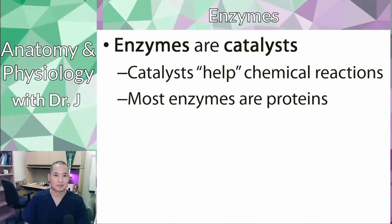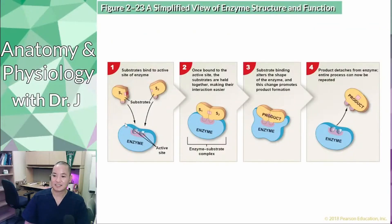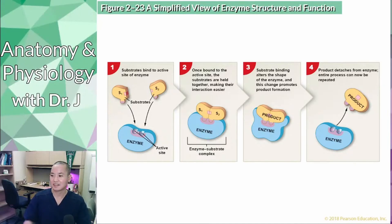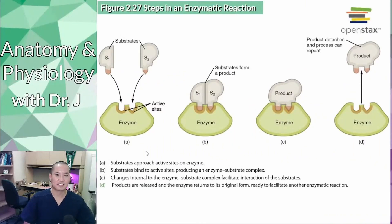Most enzymes are proteins, with exceptions like ribosomes. Enzyme names typically end with '-ase' — not always, but that's a common pattern. Enzymes don't only break things apart; if things only broke apart you'd have a hard time doing anabolic reactions and synthesizing things in your body. So enzymes can also stitch things together — you can have enzymes that help with synthesis reactions, where two substrates combine to form a final product.